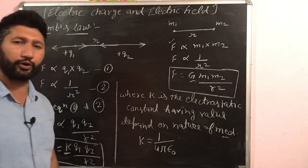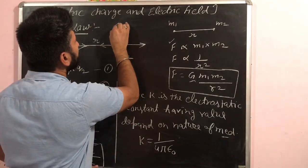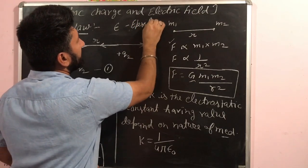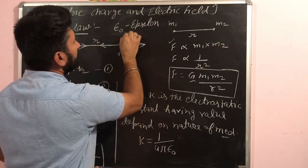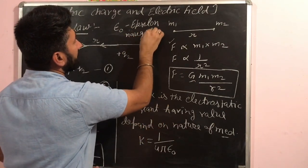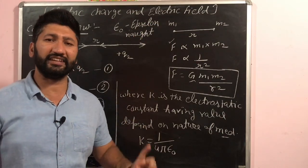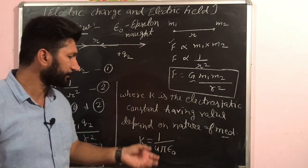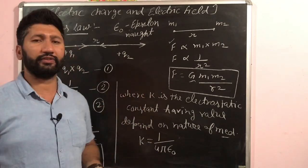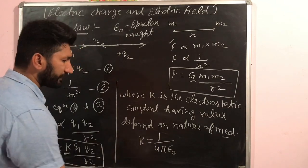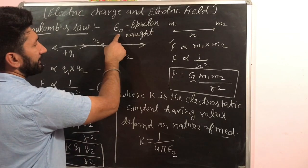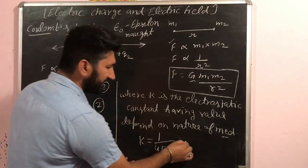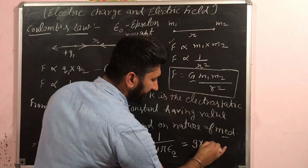This symbol ε₀ is called epsilon-naught, and it represents the permittivity of free space — applicable in the case of vacuum or air. For free space, the value of k is 9 × 10⁹.